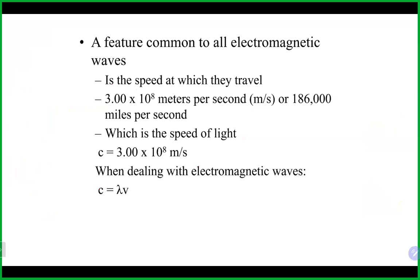When electrons go to a lower energy level, that is an exothermic process — the atom releases that energy. When electrons go to a higher energy level, that is an endothermic process — the atom gains energy. Electromagnetic waves travel at the speed of light, which is 3 times 10 to the 8 meters per second, or roughly 186,000 miles per second. The speed of light is a constant.